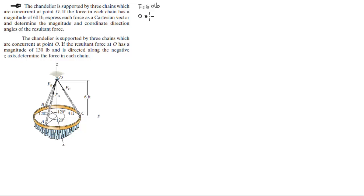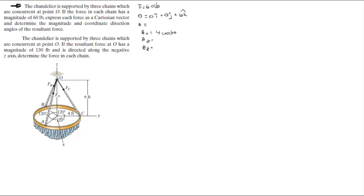Point O sits at 0i + 0j + 6k. For point A, let's find AX, AY, and AZ. AX is equal to 4 cosine of 30, because the radius of the circle is 4. We know this angle is 120 degrees, which means this angle here is 90, making this angle 30.